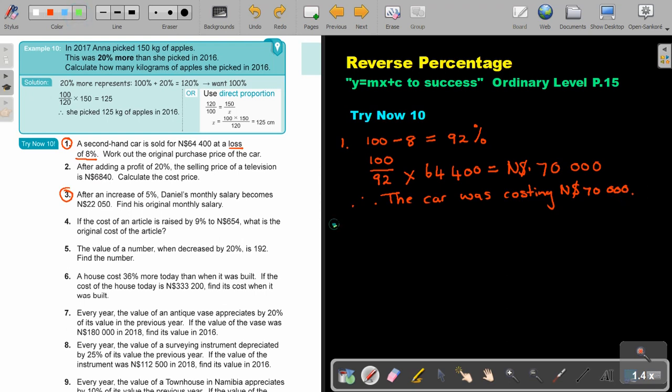Let's do number three. After an increase of 5%, always check for that key word, increase. So Daniel's monthly salary became this. Find the original, working back. So okay, but first he got his full salary and then they increase it by 5%. So actually he got 105%.